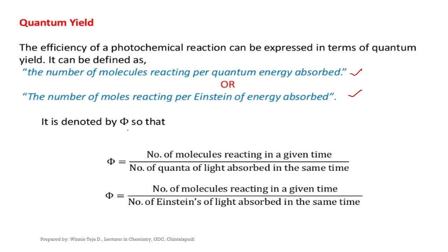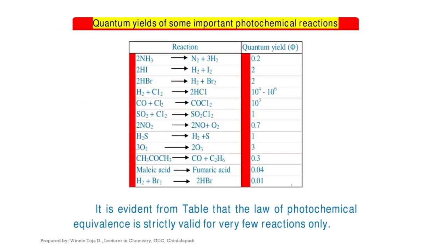Quantum yield is denoted by the symbol φ. The quantum yield is the ratio of the number of molecules reacting in a given time to the number of quanta of light absorbed in the same time. With respect to moles, quantum yield is the ratio of the number of moles of reacting substance in a given time divided by the number of Einsteins of light absorbed in the same time.